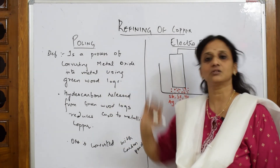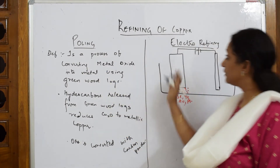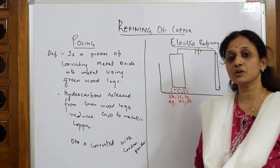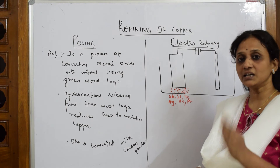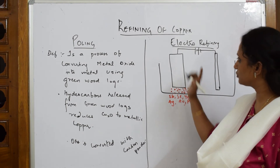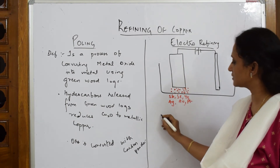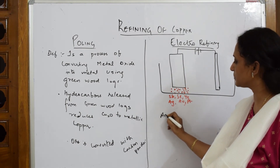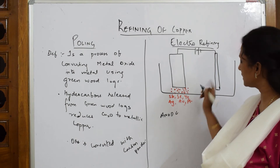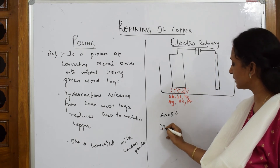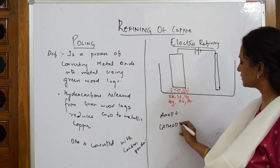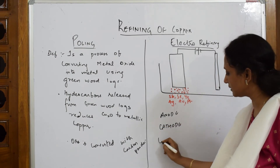Now coming to electro-refining — the most important thing in the electro-refining process is that you have to speak in terms of three things: anode, cathode, and electrolyte.